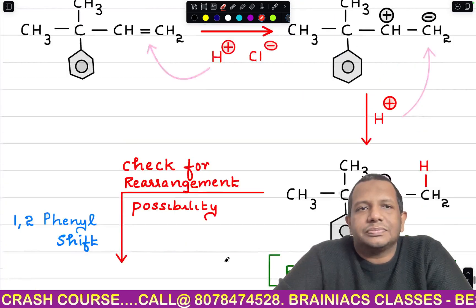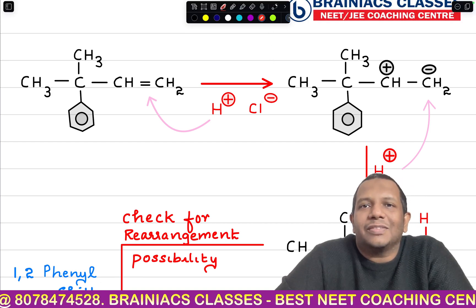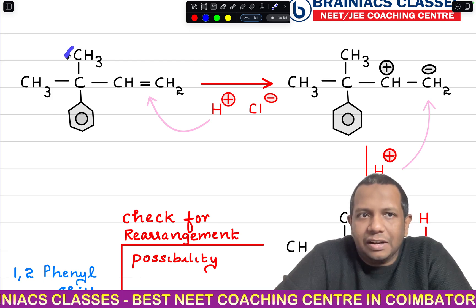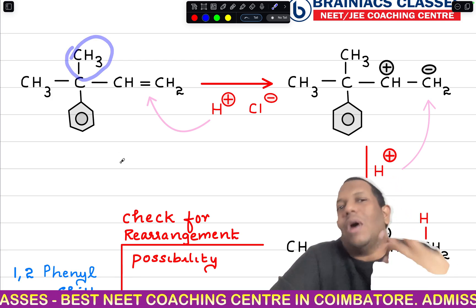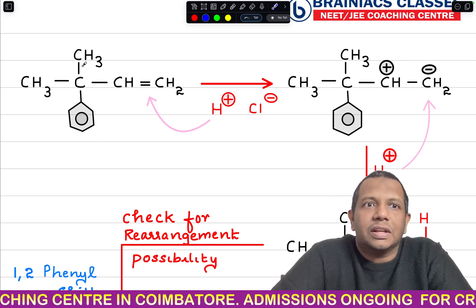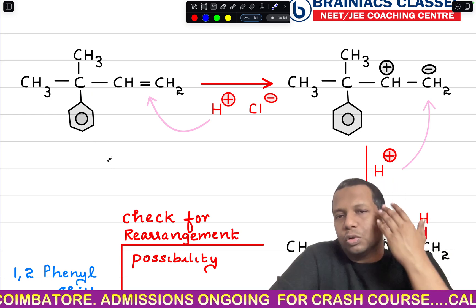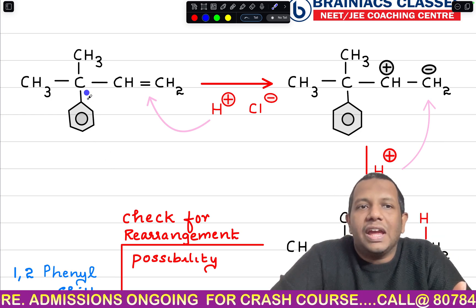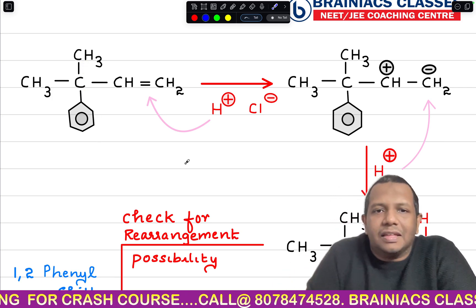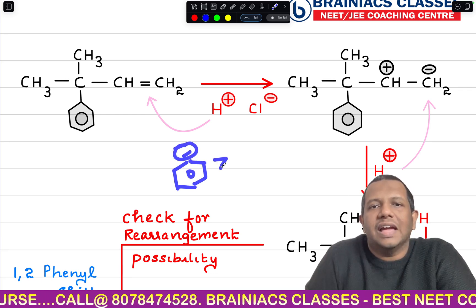Moving to the next part of the question: the only difference is that instead of hydrogen, I introduced another CH₃ group. The purpose is to confuse students during rearrangement — they need to think whether CH₃ will migrate with its pair of electrons or phenyl will migrate. Students who know that phenyl has a higher tendency of migration than CH₃ will get this right.